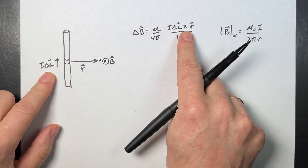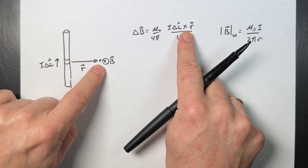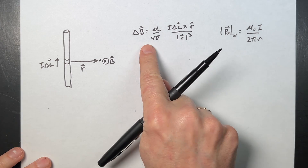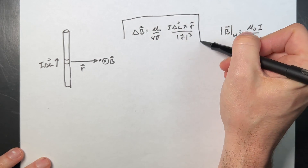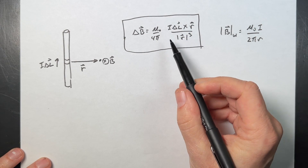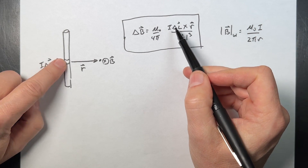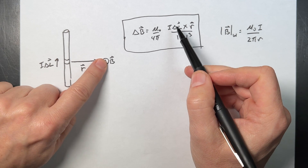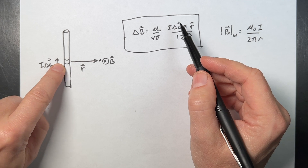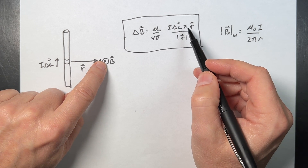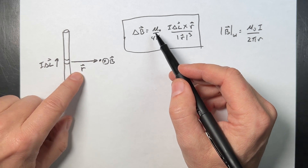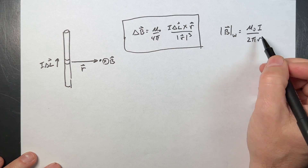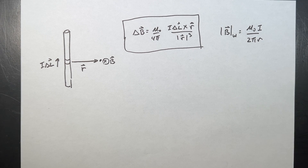We have three vectors - I delta L, R, and B - all in different directions, so it's a 3D problem. It's hard to draw on paper but in Python it works really well. This is essentially the Biot-Savart law: the magnetic field due to a short piece of wire. I need the vector of the piece, the vector of the observation location, then I find the vector from the piece to the observation location and use that to calculate the magnetic field vector. To find the total I just add up all the pieces, and the result is the magnetic field magnitude due to a wire.